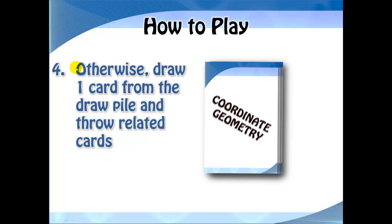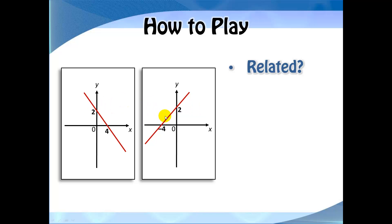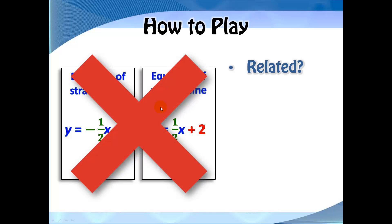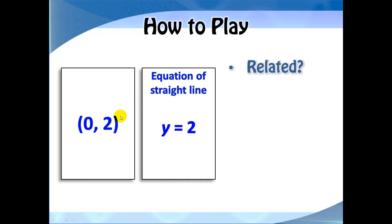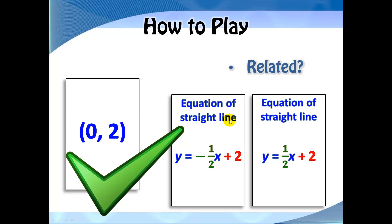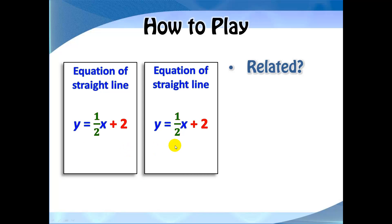Now if you have no related cards, you will need to draw one card from the draw pile and continue playing by throwing related cards. Are these two cards related? No, they are not. What about these two cards? Because these are two different straight lines, they are also not related. Are these two cards related? Yes, because y equals 2, and therefore they are related. What about these two cards — which of them are related to the coordinate (0, 2)? Yes, both cards are related to (0, 2). Finally, are these two cards related? Yes, because they are exactly the same straight line.